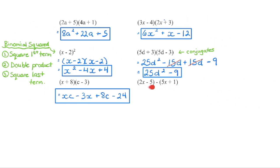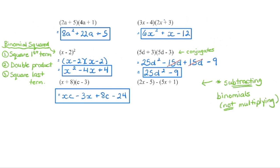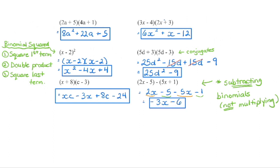Could you pause the video and try that on your own? Notice we are no longer multiplying two binomials — we are now subtracting two binomials. FOIL works only if we're multiplying. If we are subtracting, we go back to distributing: distribute that negative one into the second bracket. Negative 1 times 5x is negative 5x, and negative 1 times positive 1 is negative 1. Then combine like terms: 2x minus 5x is negative 3x, and negative 5 minus 1 is negative 6.